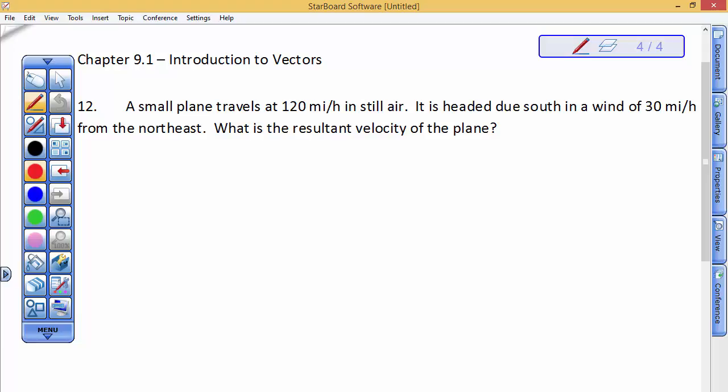A small plane travels 120 miles per hour in still air. I'm going to kind of highlight things. 120 miles per hour. It's headed due south. There's a wind of 30 miles per hour. And that wind is from the northeast.